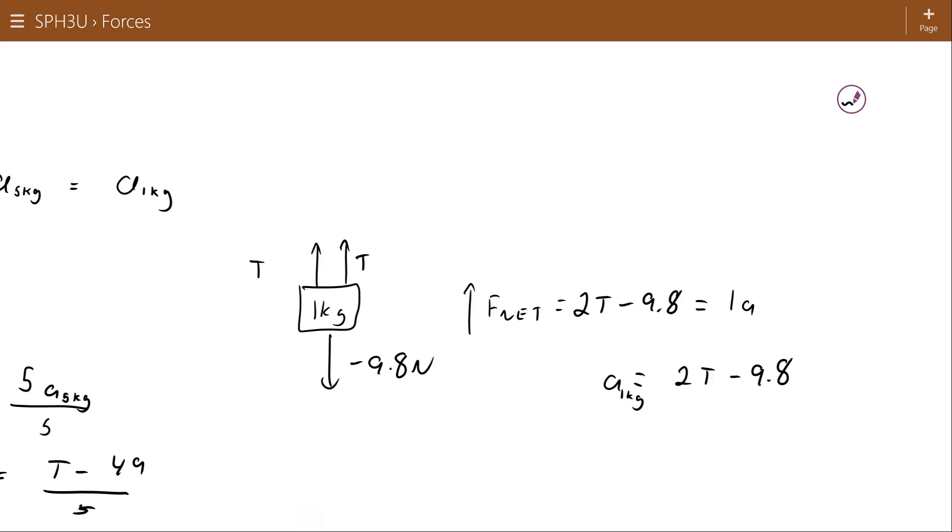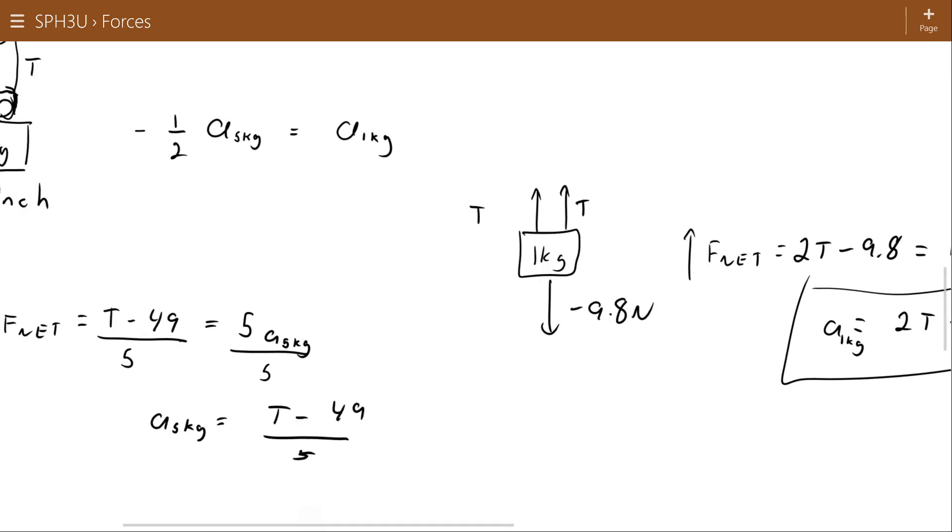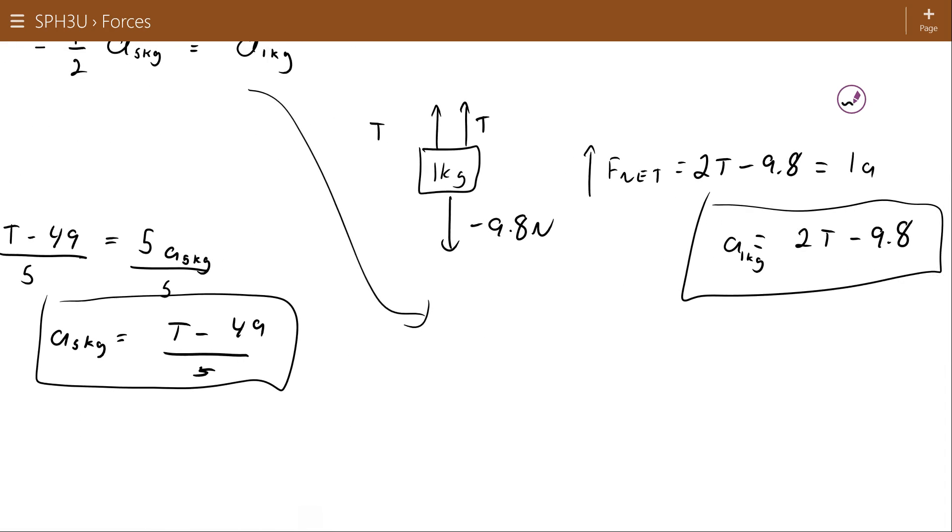That's for the 1 kilogram object. So what I have here is an expression for the 1 kilogram acceleration in terms of tension, and the 5 kilogram in terms of tension. I'm going to substitute those both into that relationship for their accelerations to find the tension. So, negative 1 half times T minus 49 over 5, and that's going to be equal to 2T minus 9.8.